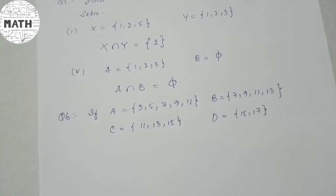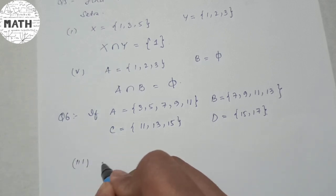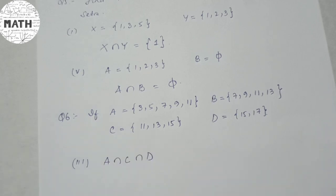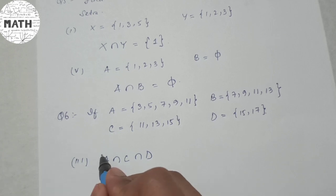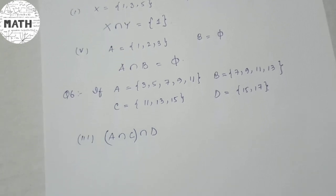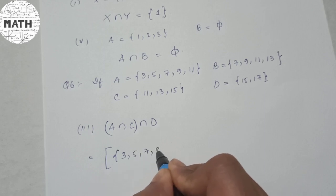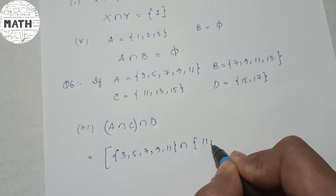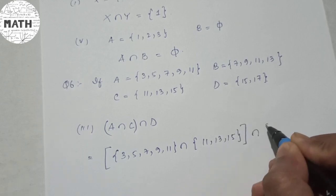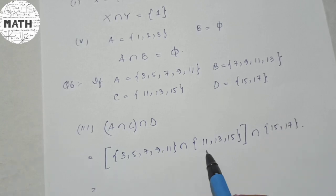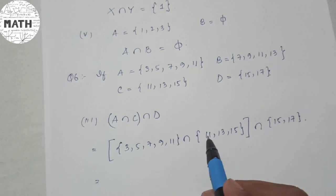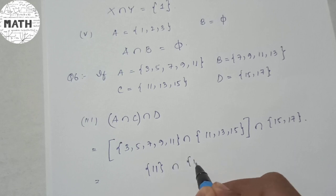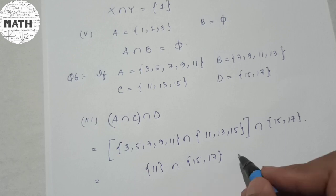Question 6: Given A = {3, 5, 7, 9, 11}, B = {7, 9, 11, 13}, C = {11, 13, 15}, D = {15, 17}. For number 3, find A intersection C intersection D. First, A intersection C: the only common element between A and C is 11. Then {11} intersection D = {15, 17}: there is no common element, so the answer is the empty set.